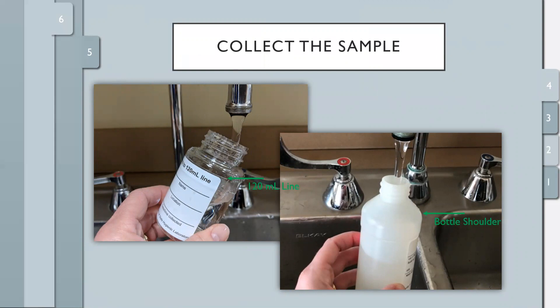Usually this will be the shoulder, where the bottle begins to curve in. You may have a bottle with a label that says fill to the 120 milliliter line. That line is just below the shoulder, as indicated by the green arrow here on this picture.